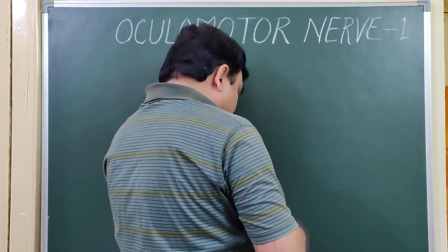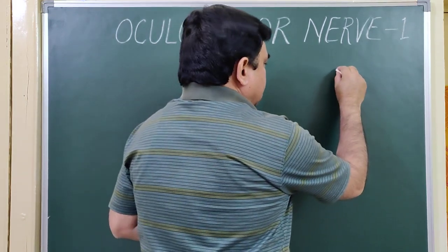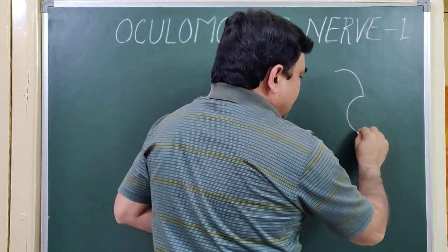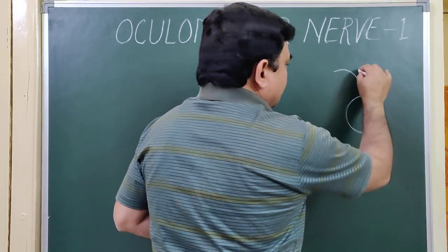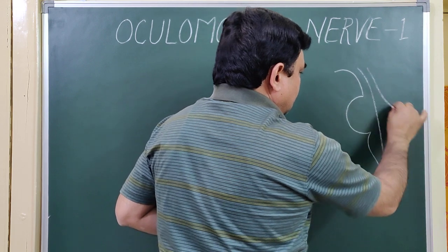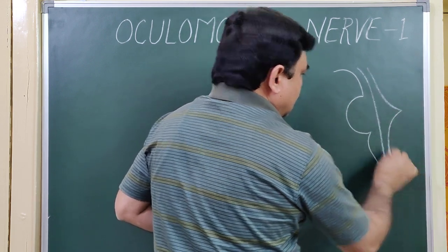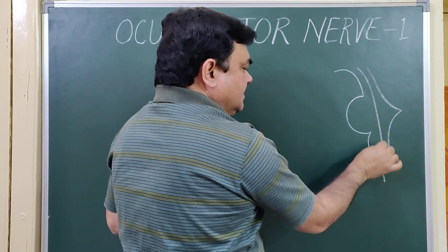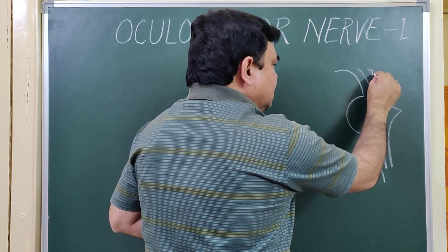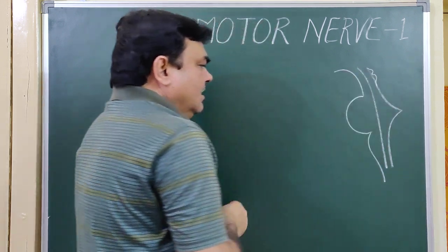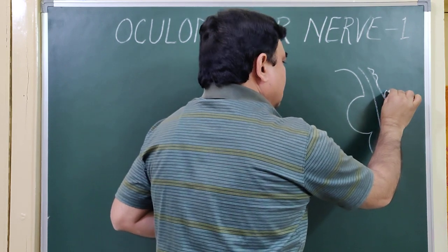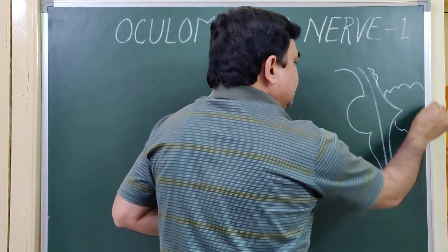If you make a diagram, this is the position of the brain stem. This is the midbrain, this is the pons. Here is the superior colliculus and this is the inferior colliculus level. Here is the cerebellum.